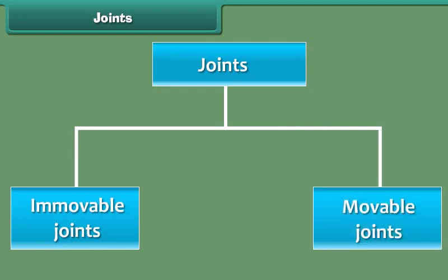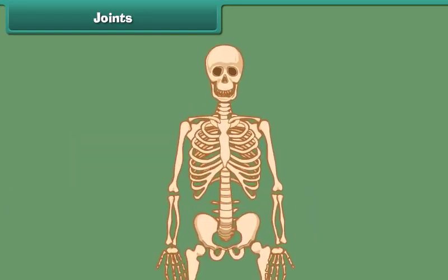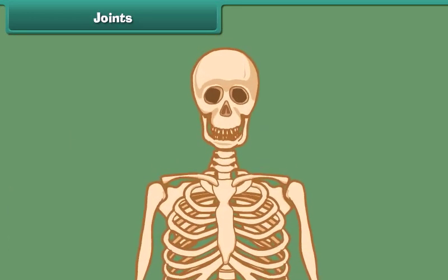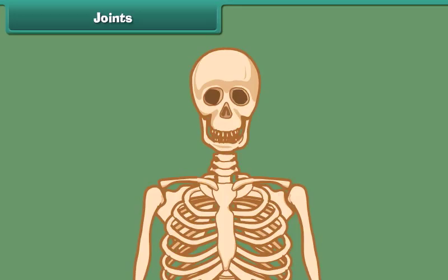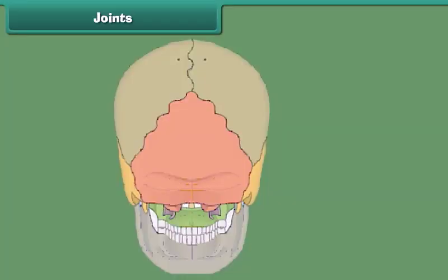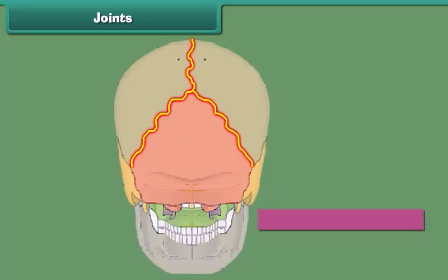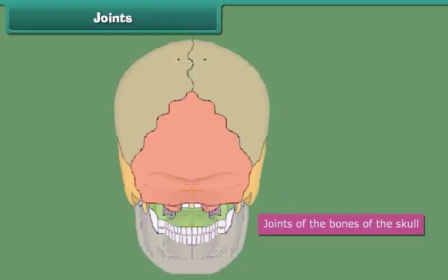Let us first discuss what immovable joints are. Immovable joints are the joints where no movement of the bones is possible. The joints of the bones of the skull are immovable joints.